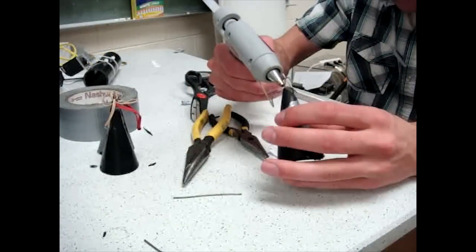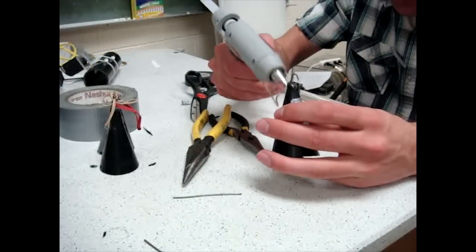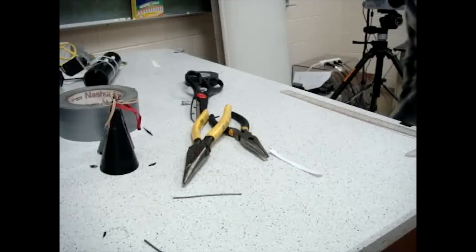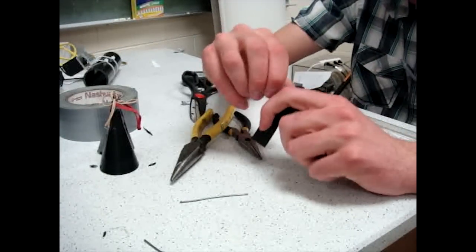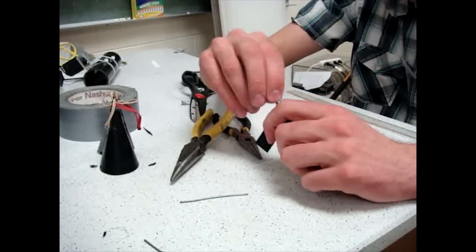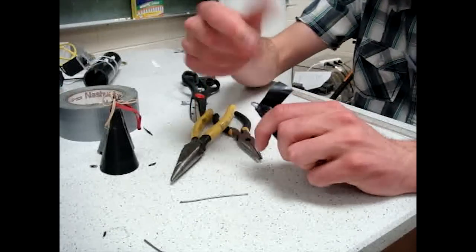Once you are done making the hooks, you will want to completely seal off the ends so that no water can leak through by using hot glue and electrical tape. Make sure you repeat this twice to make the two end caps.